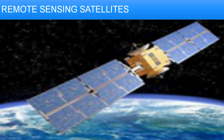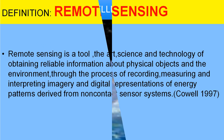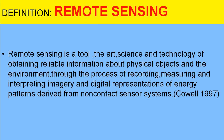Our next topic is remote sensing satellites. Remote means a very far away place, and sensor means gaining or acquiring information without any human or machine touch. So remote sensing is a technology through which we acquire data or information about any object on earth without any physical or direct contact. It is a science of measuring the physical properties of an object.